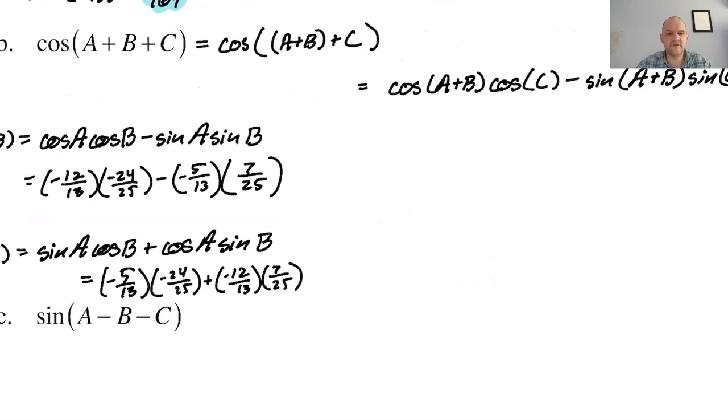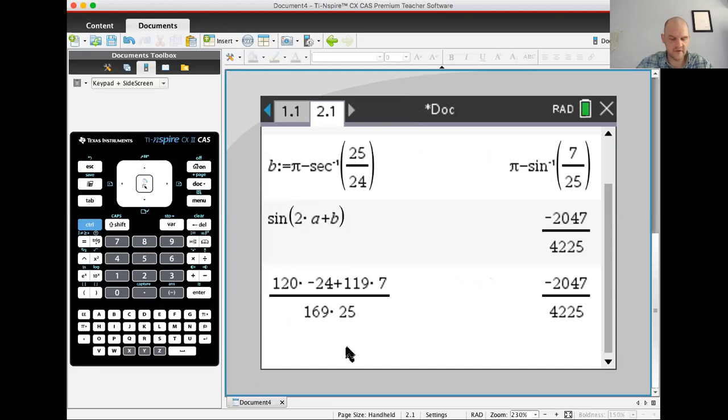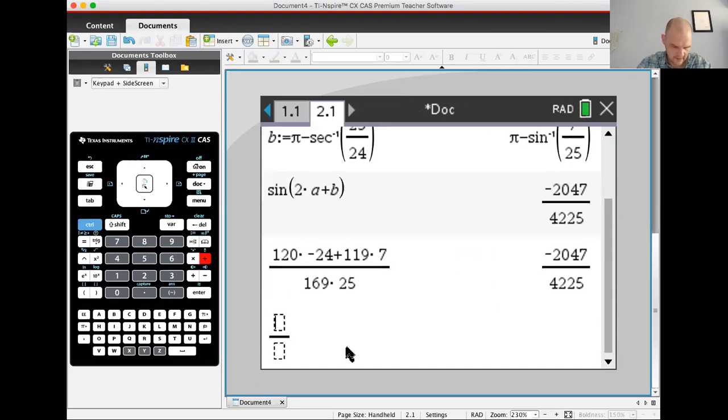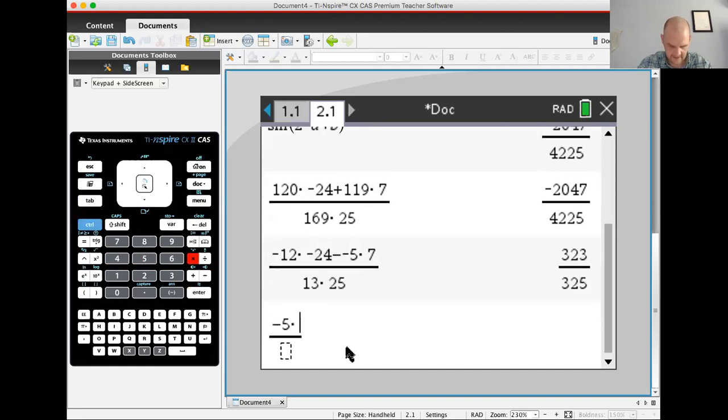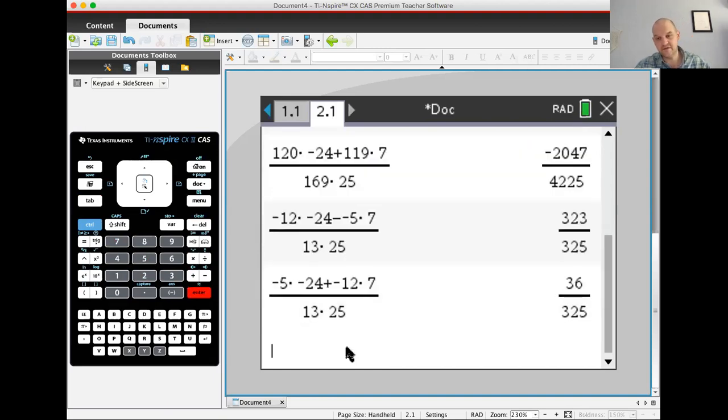Let me just do those on the calculator. So I need negative 12 times negative 24 minus negative 5 times 7. And that's over 13 times 25. So that'll be 323 over 325. And then negative 5 times negative 24 plus negative 12 times 7 over 13 times 25. They should always have the same denominator. So that means 36, 323, 325 should be a Pythagorean triple. And it is.